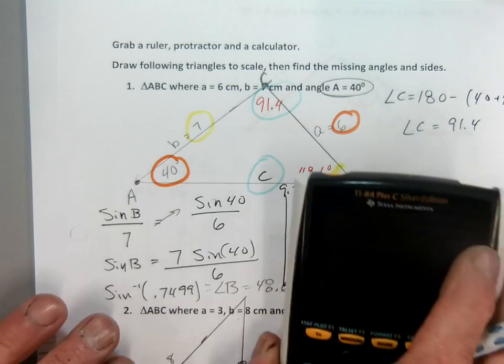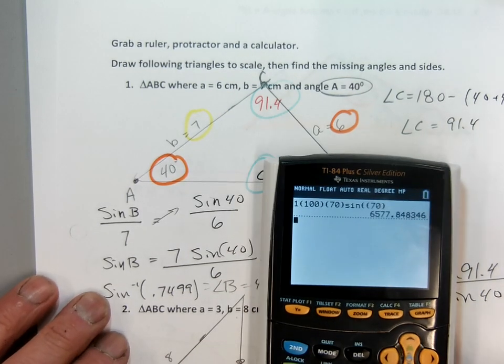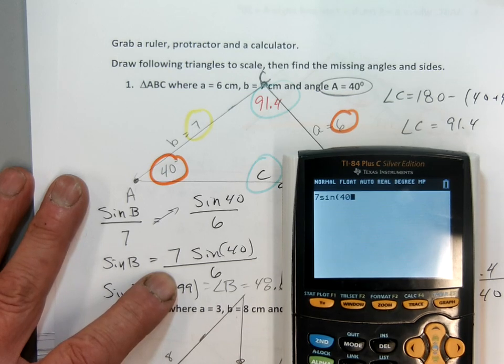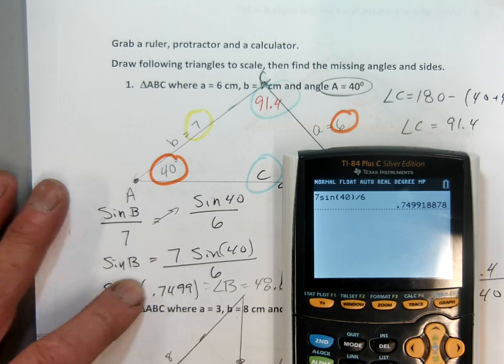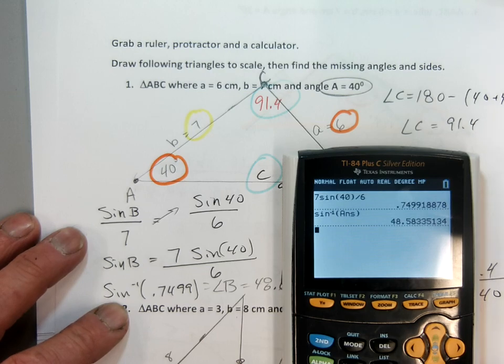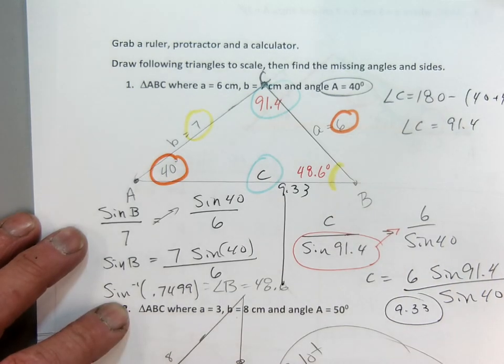Let me show that to you. Here's a good calculator. So I just went seven sine 40 divided by six. I got a decimal and I went sine inverse because I want to find the angle of that answer and I get an answer about 48.6. So I put that in my triangle.